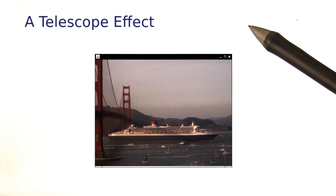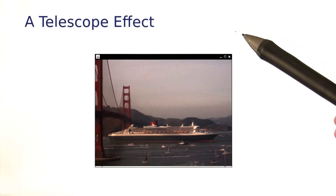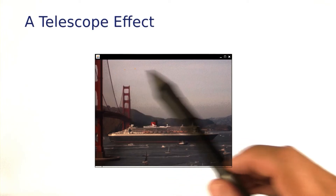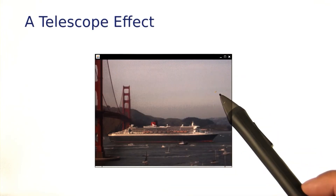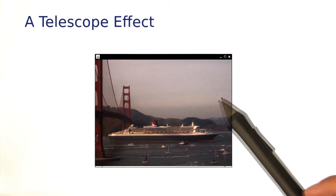Another situation in which nested loops often arise is image editing. In the past, we've traversed the pixels of an image in a single loop going a row at a time, but there are many situations when it makes more sense to make separate loops for the rows and columns.